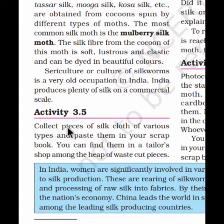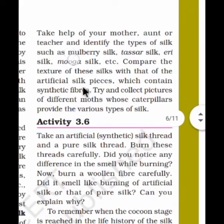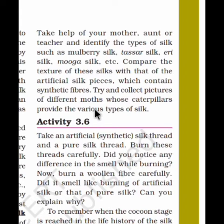Next activity: Collect pieces of silk cloth of various types and paste them in your scrapbook. Take samples of different varieties of silk — you can find them in a tailor shop among the fabric cut-pieces. Take help of your mother and teacher to identify types such as mulberry silk, Tassar silk, Eri silk, Muga silk, etc. Compare the texture of natural silks with that of artificial silk, which contains synthetic fibers.